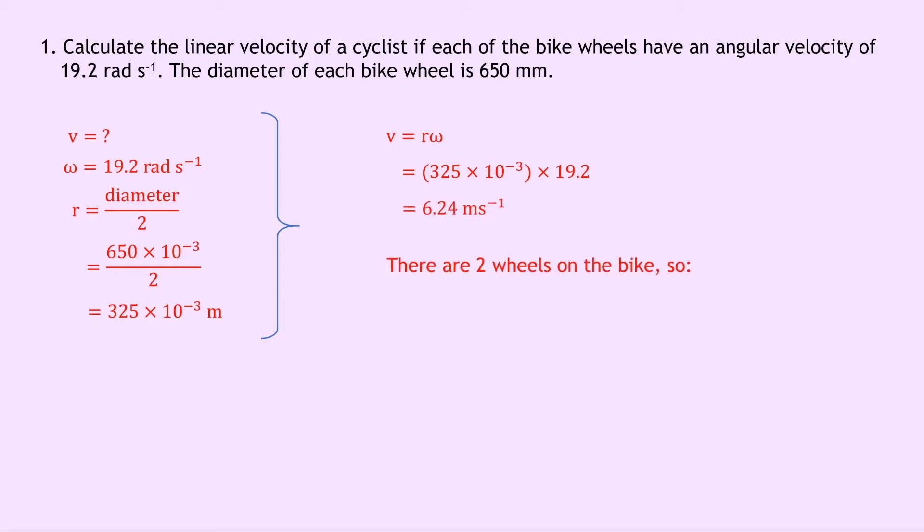Now notice that there are two wheels on the bike, and we've only calculated the linear velocity for one of them, so what we need to do is just multiply our answer by 2 to get 2 times 6.24, which gives us 12.5 meters per second.